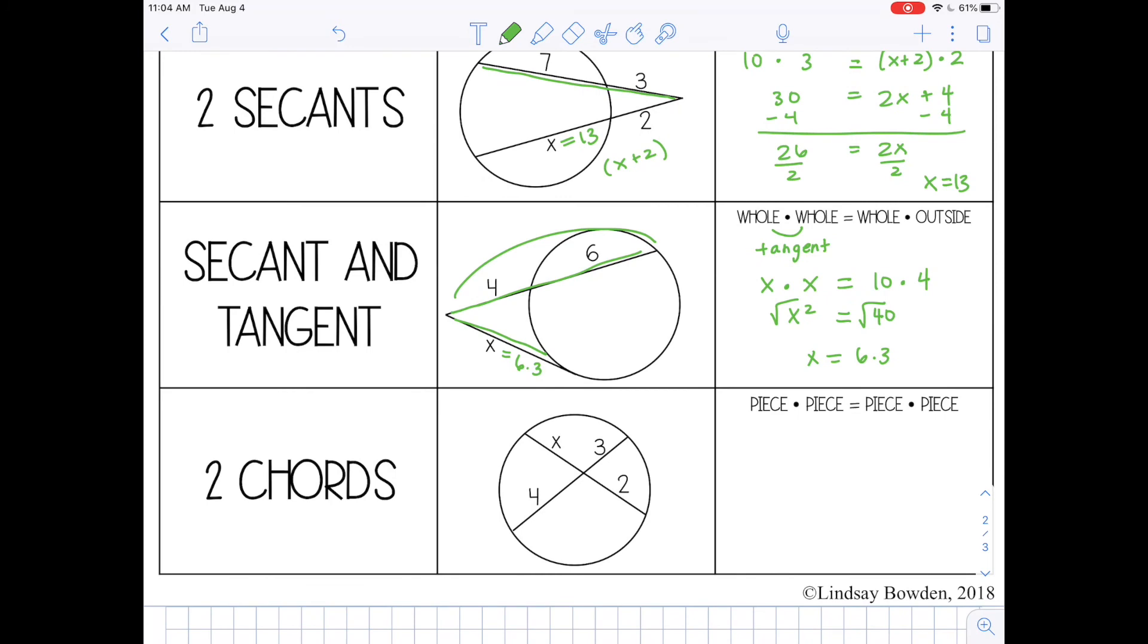The last theorem is when you have two chords. And the theorem says piece times piece equals piece times piece. The only thing you need to make sure you do on this theorem is make sure that you match pieces that are on the same chord. So I want to match x and 2 and multiply those together, and then 3 and 4. All right, so x times 2 is 2x, 3 times 4 is 12. Divide by 2 on both sides, so x equals 6.